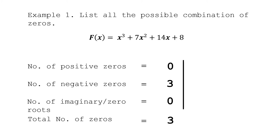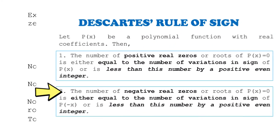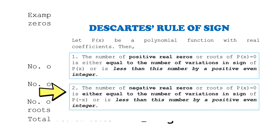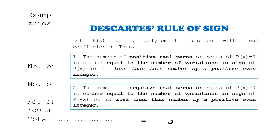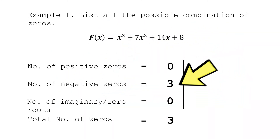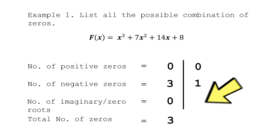We have a second combination because the number of negative zeros is 3, and the rule says we can have less than this number by a positive even integer. The even integer here is 2, so we deduct 2 from 3 to get 1. The number of positive zeros remains 0, since that is fixed by its variation count. With only 1 negative zero and 0 positive zeros against a total of 3, there will automatically be 2 imaginary or zero roots in the second combination.